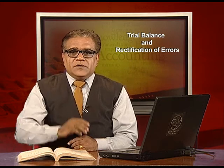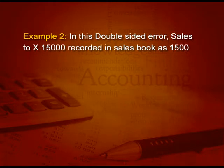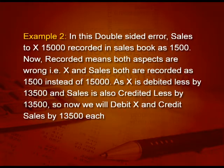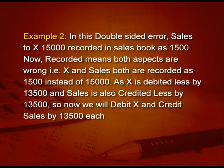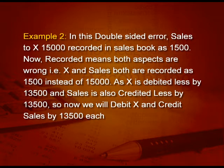Take another example: sales to X of 15,000 recorded in the sales book as 1,500. Recorded in the original book means both aspects are wrong — X and sales are both 1,500 instead of 15,000. Now, the right entry is debit X, credit sales 15,000. What you have done is debit X 1,500 and credit sales 1,500. Both aspects are less, so you put one more entry of 13,500. The wrong entry mixed with the rectification entry gives you the right effect: 1,500 plus 13,500 equals 15,000.